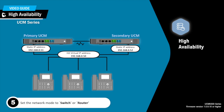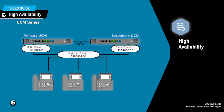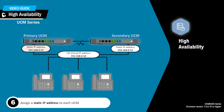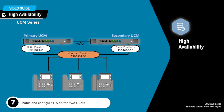Because the HA feature does not support WAN mode, the network mode on both UCMs must be set to either switch or router mode. Both devices must be assigned static IP addresses. You will need to log into the web interface of the UCM and manually configure the static IP address and the network settings. After you ensure all the configuration prerequisites are met, you can enable and configure high availability on both UCMs.